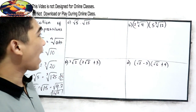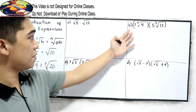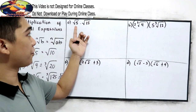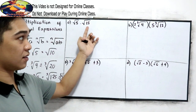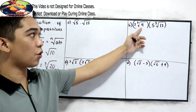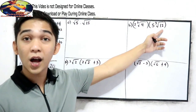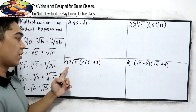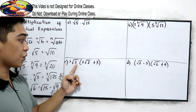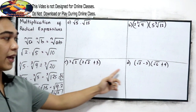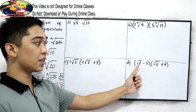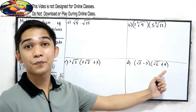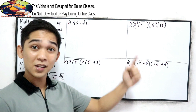Now let's have these problems: A, B, C, and D. In letter A, we have square root of 5 times square root of 15. Letter B, 2 cube root of 4 times 5 cube root of 12. Letter C, 3 square root of 2 times quantity 2 square root of 2 plus 3. And letter D, quantity square root of 2 minus 3 times quantity square root of 6 plus 4. Let's solve one by one.